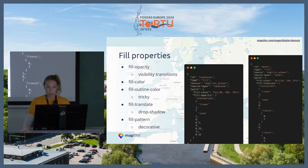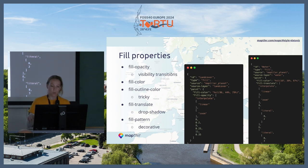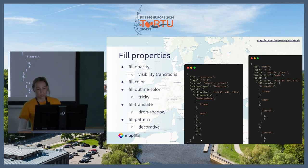Now let's get to the fill properties. These are mainly for polygon data. The most used ones in the spec are opacity, color, translate, and pattern. With opacity, you can achieve nice visibility transitions across zoom — you can start with zero opacity and then gradually increase that to value one, which equals full visibility. Such an example can be seen here, but it's ending at 0.35.